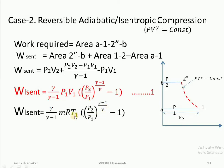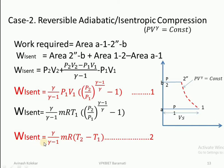Again, replacing pressure-volume terms with temperatures gives the final expression: W_isentropic equals gamma/(gamma−1) times mR times (T2 minus T1). The expressions for polytropic and reversible adiabatic processes are the same in form — only gamma and n replace each other. So you can remember them easily. This is the second case.